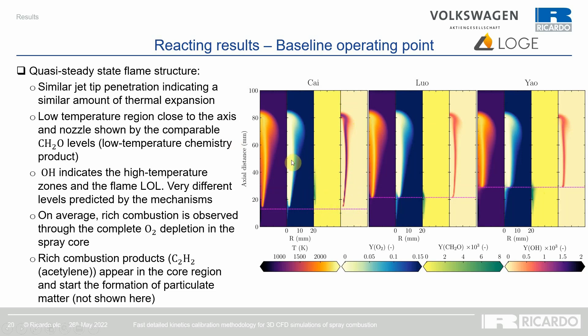Rich combustion is observed on average, with O2 almost completely depleted in the core of the spray. This rich combustion generates products such as acetylene in the core region, initiating the formation of particulate matter.